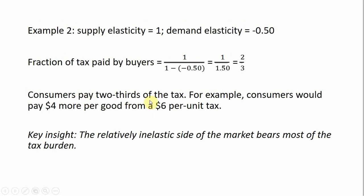So consumers will pay two-thirds of the tax. If there happened to be a $6 tax in this market, consumers would pay two-thirds of that, or $4, in the form of higher prices — paying exactly $4 more per good in the face of a $6 tax. The key insight is that the relatively inelastic side of the market, in this case the demand side, will pay the majority of the tax.